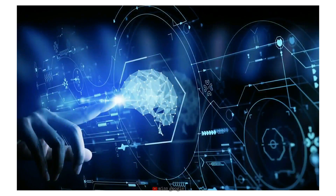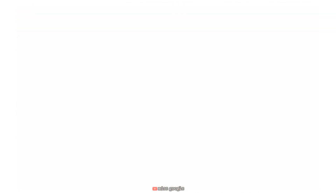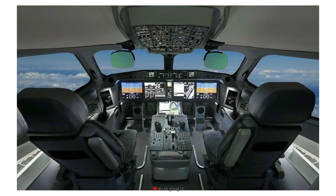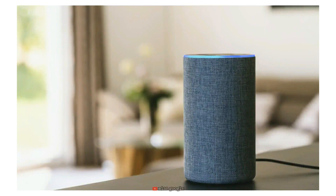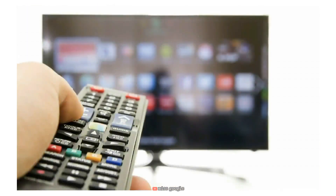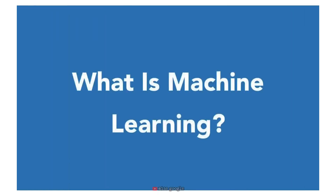Whether we realize it or not, machine learning is all around us — from anti-lock braking systems to autopilot systems in airplanes and cars, smart speakers which serve as personal digital assistants, to systems that learn our movie preferences and recommend what to watch next. Machine learning has become ubiquitous in our lives. So what is machine learning? The term machine learning is an old one — it's been a while since people referred to computers as machines. To understand what machine learning is, let's discuss how it came to be.